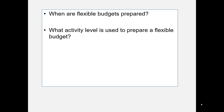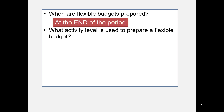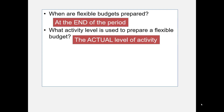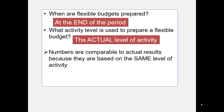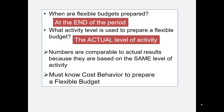When are flexible budgets prepared? They must be prepared at the end of the period because they are based on the actual level of activity — you have to know that before you can prepare them. These numbers will be more comparable to actual results because they will be at the same level of activity. Note that you must know cost behavior to prepare a flexible budget — that is, you need to know variable versus fixed costs.